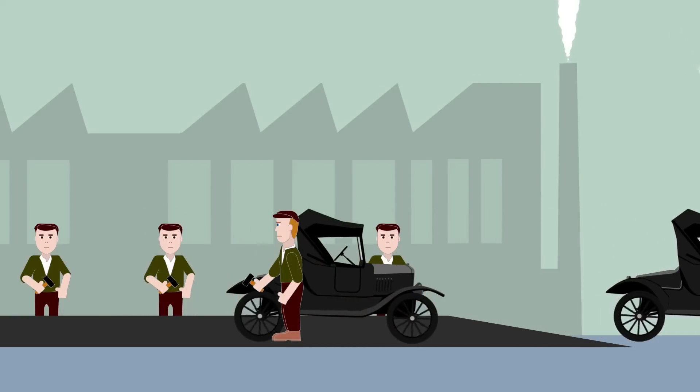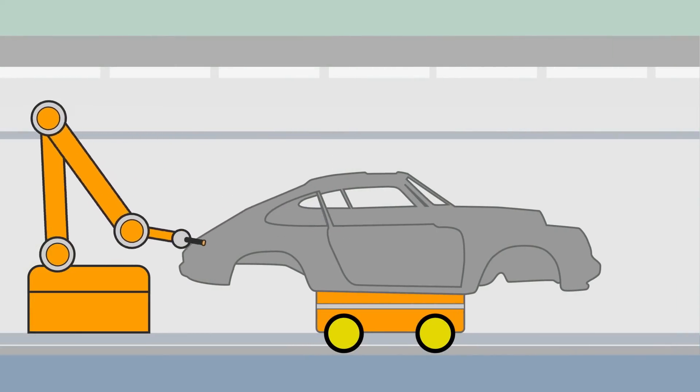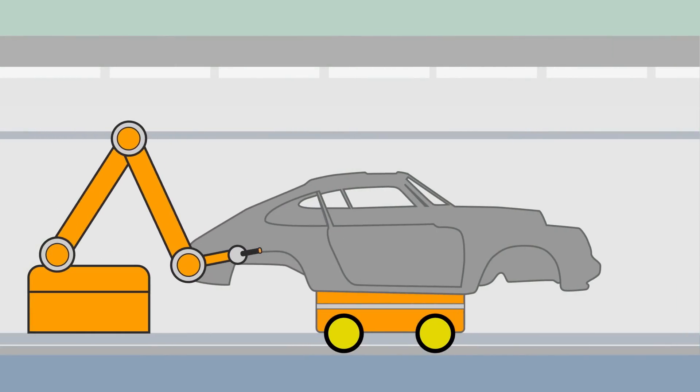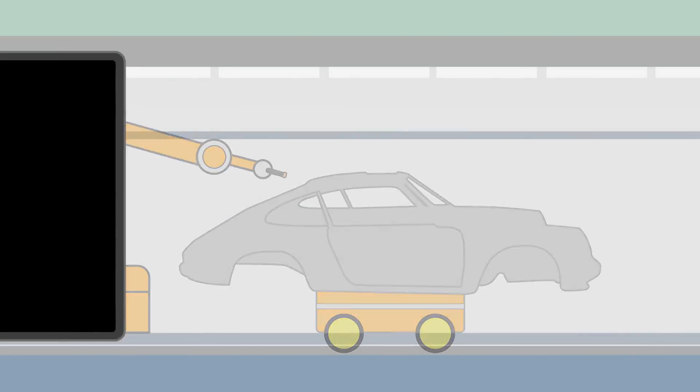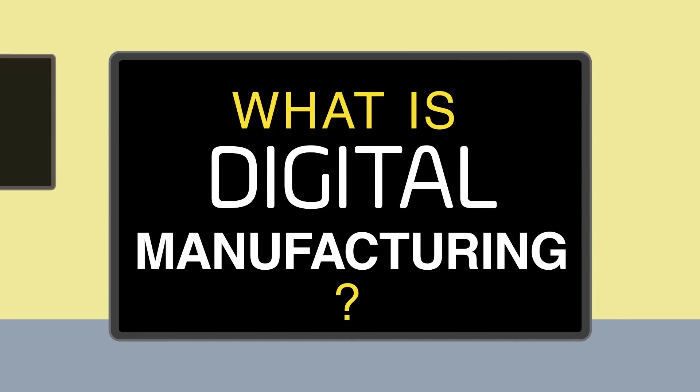Production lines and factories have changed to include digital technology, things like robot arms which now help build cars. In the future, manufacturing will use more and more of these digital technologies. What is digital manufacturing then?